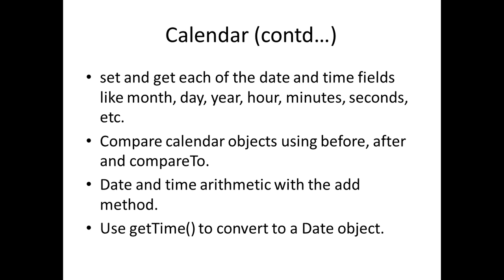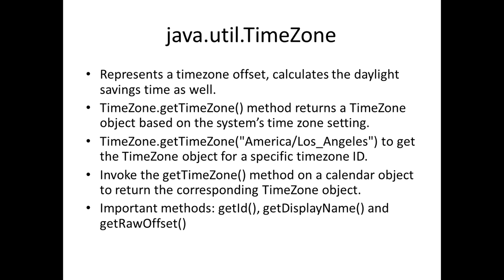You can also perform date and time arithmetic with the add method. When you use it you must specify which calendar unit you are changing — whether you are adding to the month, year, hour, or minutes. The Calendar class also has a getTime method to convert the calendar into a Date object. There is also a TimeZone class in the java.util package that represents a time zone offset from GMT and calculates daylight savings time.